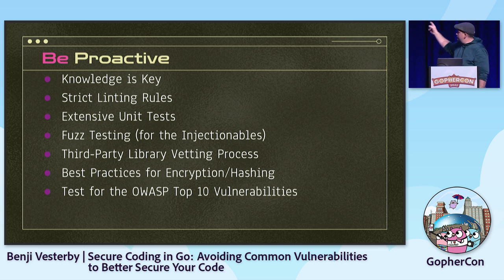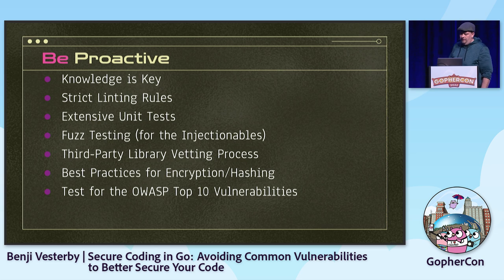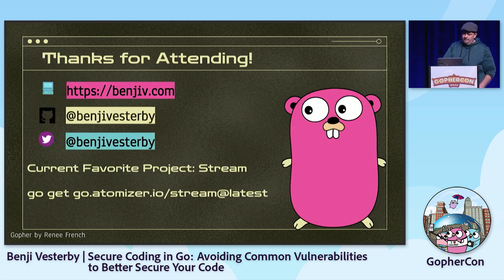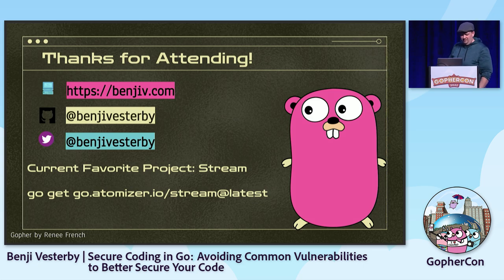OWASP has a list of the top 10 vulnerabilities and their website has a lot of information. The thing security practitioners don't do well is telling you how to fix issues in your specific language, and Go is kind of young. There is a security channel in the Go Slack if you have questions — reach out to the Go team or other community members. Anyway, that's my talk. Thanks for attending. This is my current favorite library — if you've been hanging out at the swarm, you've heard me talk nonstop about it. This library is accidentally awesome, and if you want to know why, I'll tell you afterwards.